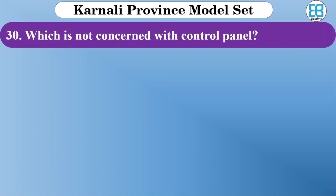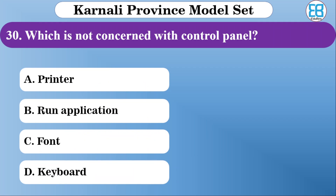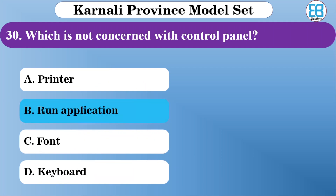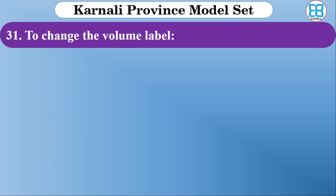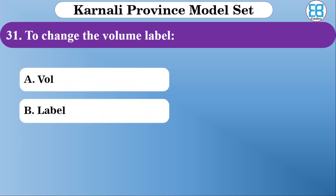Which is not concerned with the control panel? The options are font, keyboard, printer, and application. The correct option — the one not related to the control panel — is application. Font, keyboard, and printer are related to the control panel.